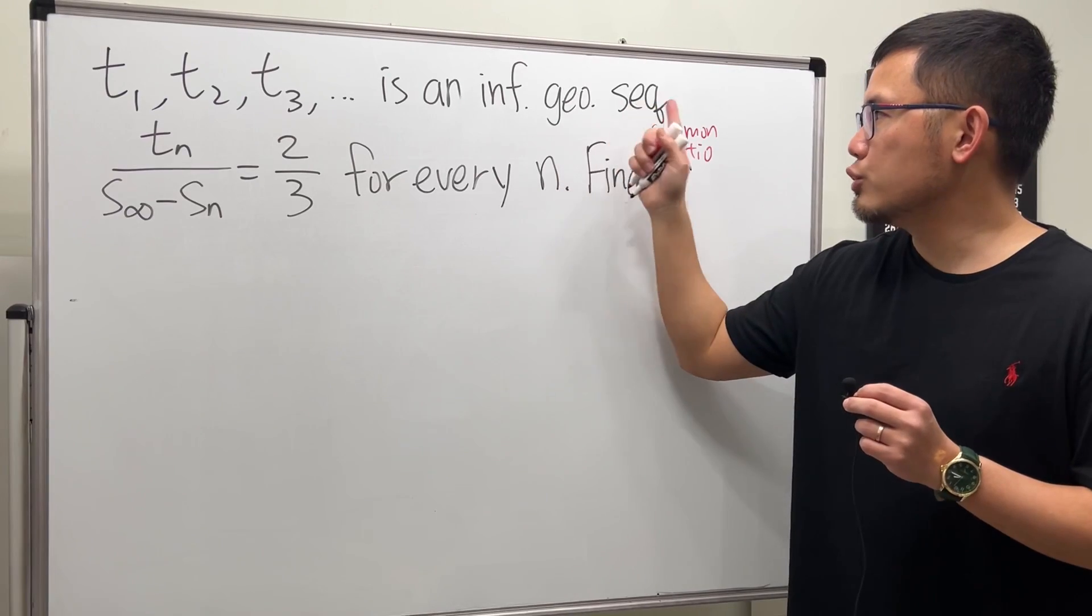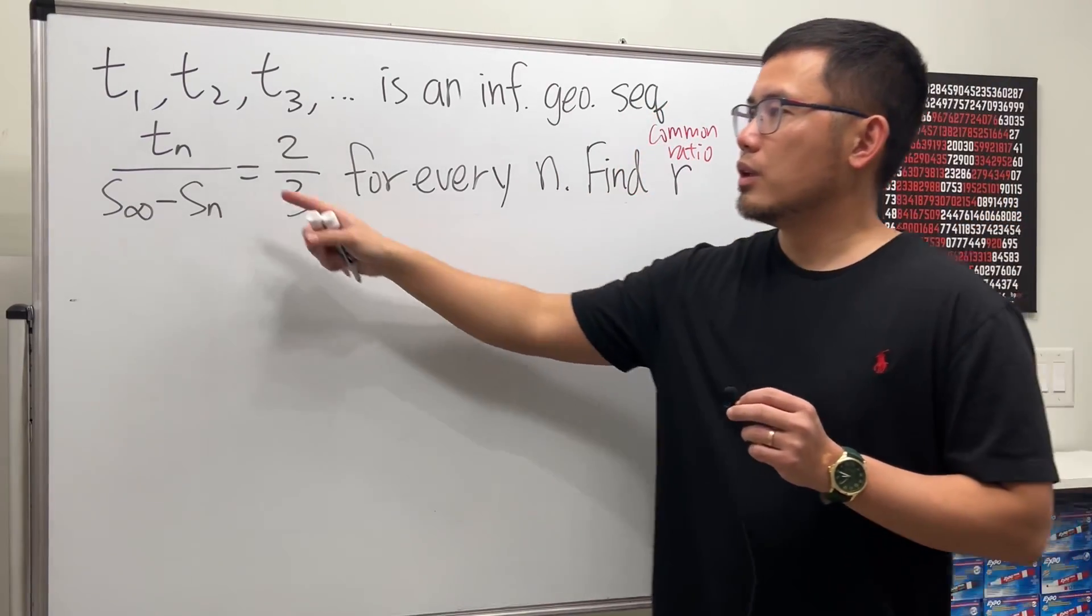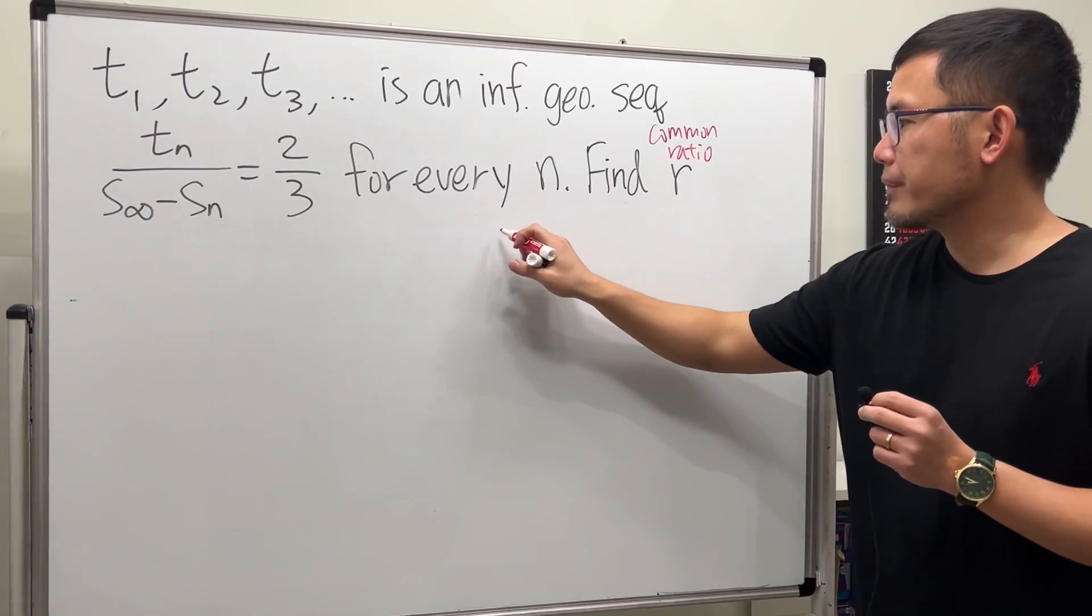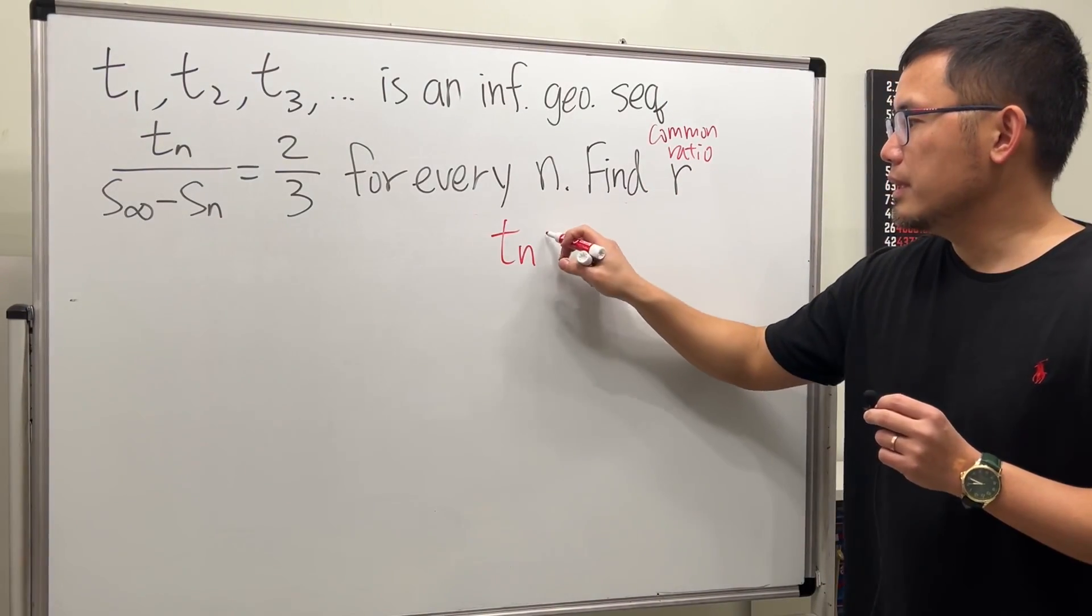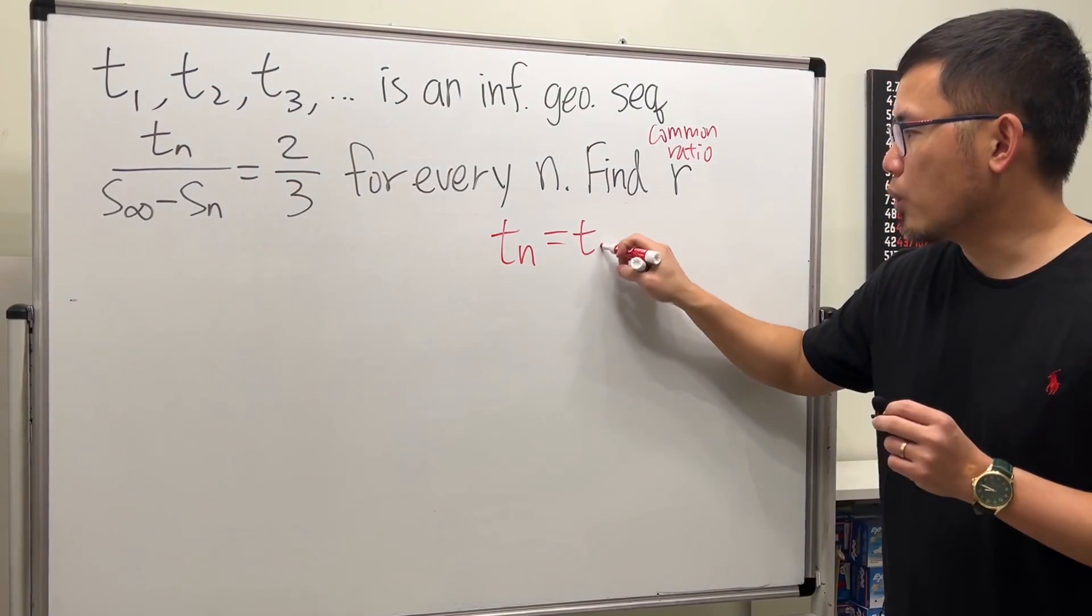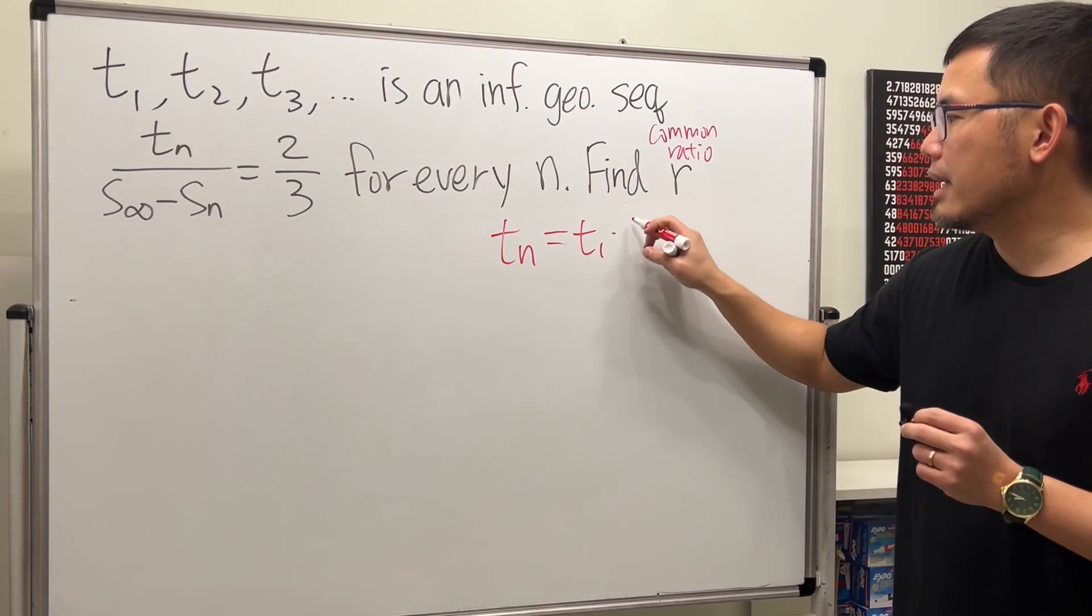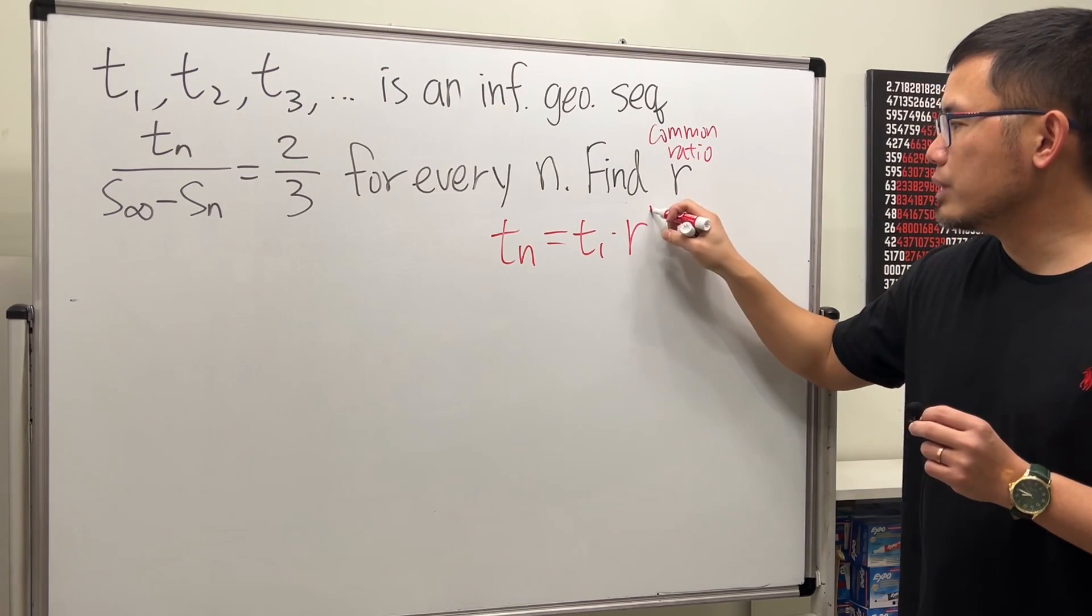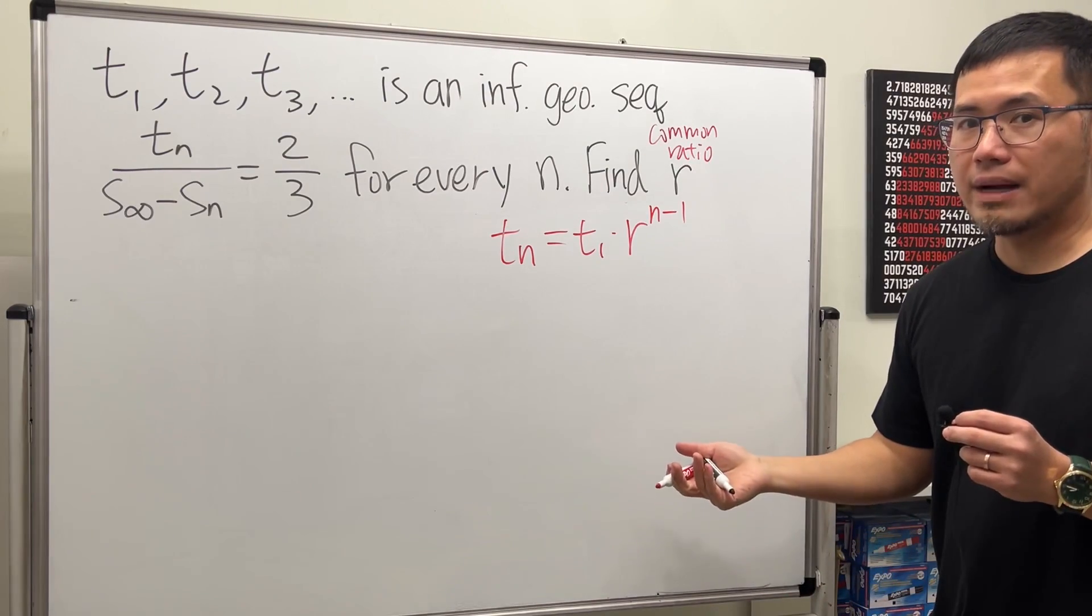And when we have a geometric sequence, we do have a general formula for tn. So let me write that down. The nth term is just going to be, we start with the first term, which is t1, and then we multiply by r, which is the common ratio, and then raise that to the n minus 1 power, just like that.